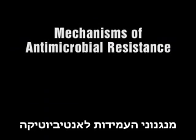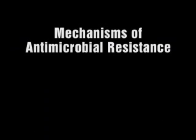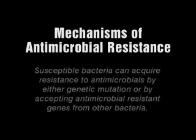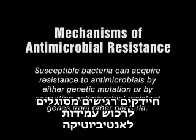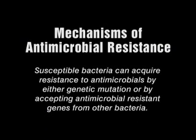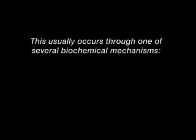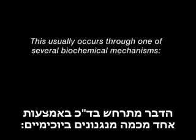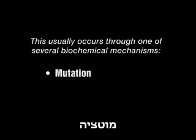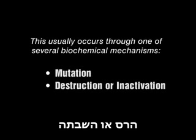Mechanisms of Antimicrobial Resistance. Susceptible bacteria can acquire resistance to antimicrobials by either genetic mutation or by accepting antimicrobial-resistant genes from other bacteria. This usually occurs through one of several biochemical mechanisms: mutation, destruction or inactivation, and efflux.